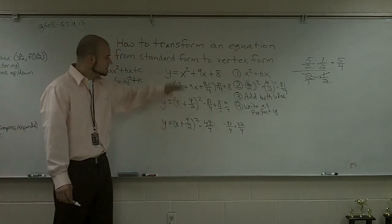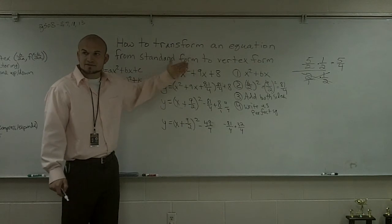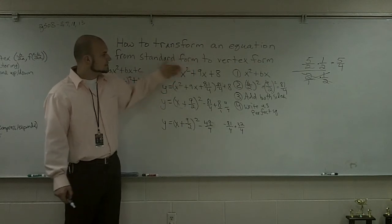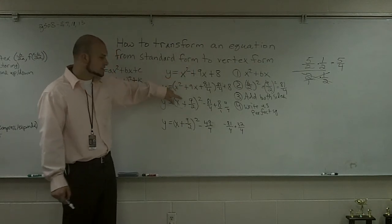Therefore, now I've transferred it to vertex form. So if you have a b that's not divisible by 2, that's OK. You can still square it and get the perfect square.